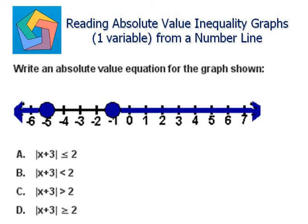Next problem: write an absolute value equation for the graph shown. Here the solution is going to the left of negative 5 and at negative 5, and at negative 1 and to the right of negative 1. So we can say x is less than or equal to negative 5, and x is greater than or equal to negative 1.